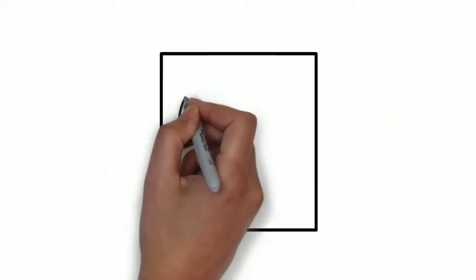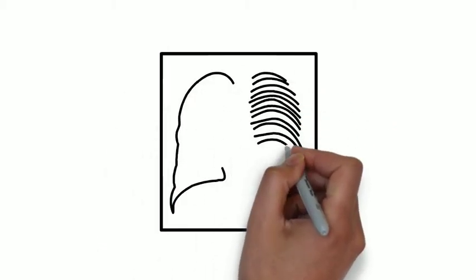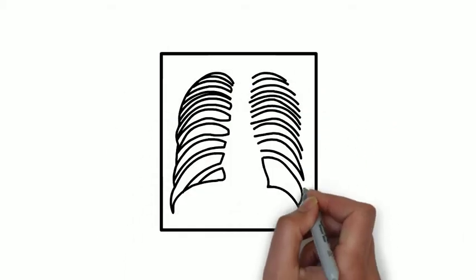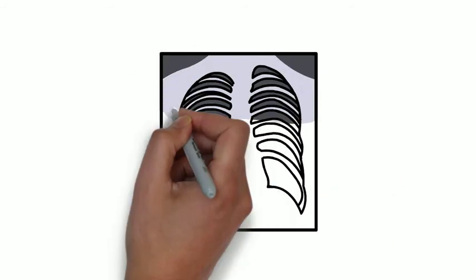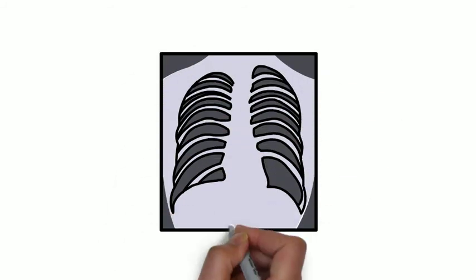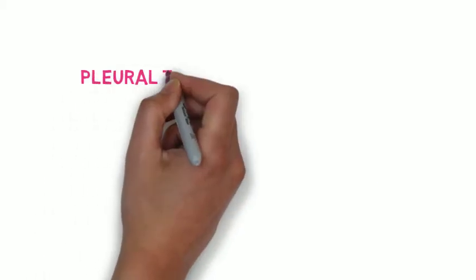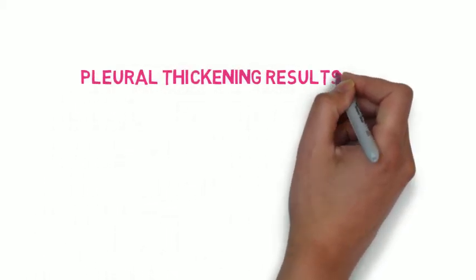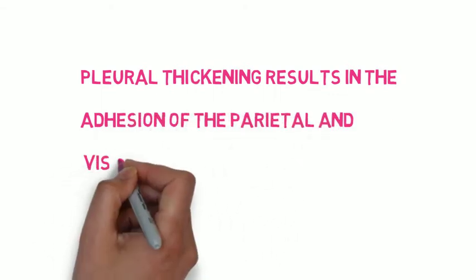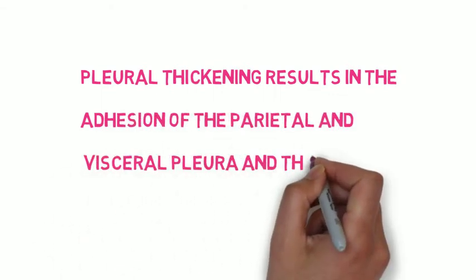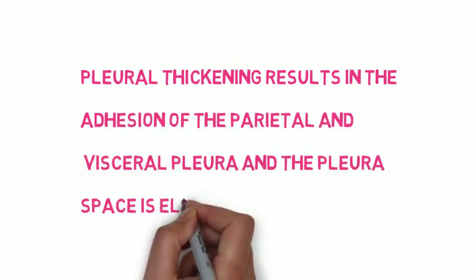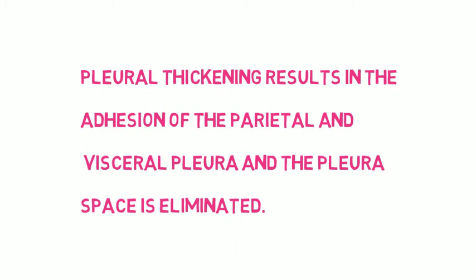Pleural plaques do not normally cause any symptoms and they're often picked up incidentally on the chest x-ray. Sometimes they can calcify and cause symptoms, but mostly they are asymptomatic.